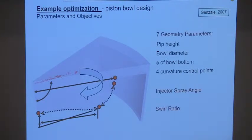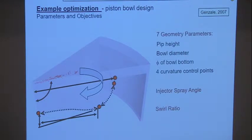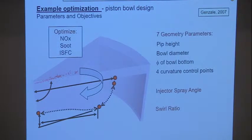Picking a particular set of these parameters, putting that into the GA optimization, seeing how it performs, picking the best performers, and combining their characteristics is the basic idea. At the end of the day, for this particular study we want to optimize for nitric oxide, soot, and indicated specific fuel consumption.